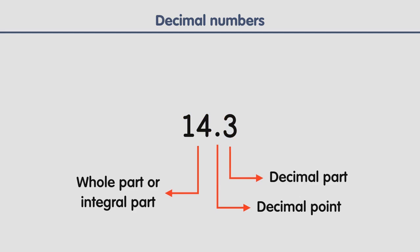The number of digits after the decimal point are called the number of decimal places. There is one decimal place in 14.3.